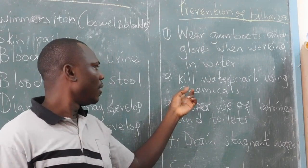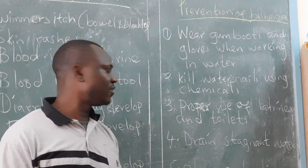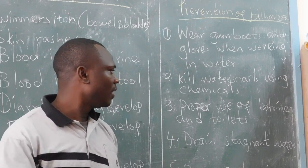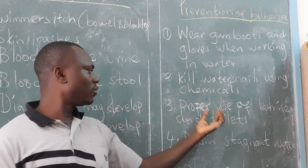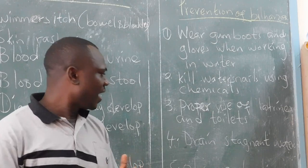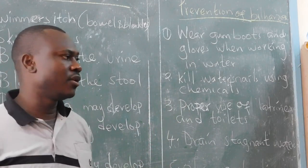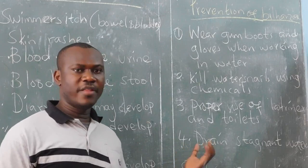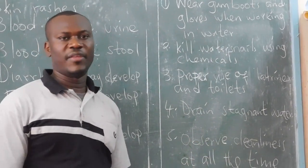Number two: we need to kill freshwater snails using chemicals. Why? Because when the freshwater snails are not in water, the eggs of the bilharzia will not hatch. Again, you need to use proper sanitation — urination and defecation should be done in latrines or toilets so that those eggs do not get into water bodies. Also, when you see stagnant water bodies, you need to drain them to kill the freshwater snails.